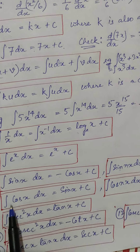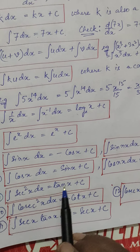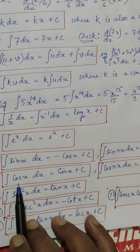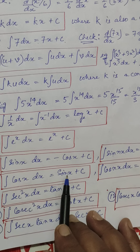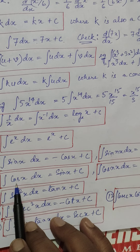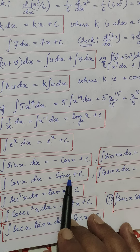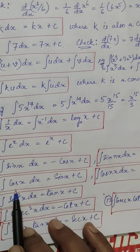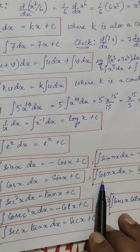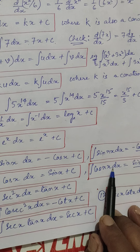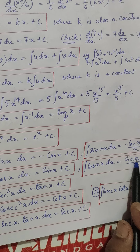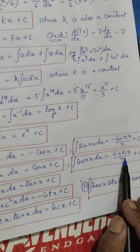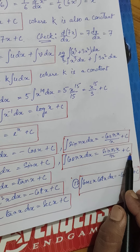Similarly, integration of cos x dx is sin x + c. Note that while differentiation of cos x was minus sin x, integration of cos x is sin x — it is the reverse. This is because differentiation of sin x is cos x. For integration of cos(nx) dx, the result is sin(nx) divided by n, plus a constant c.